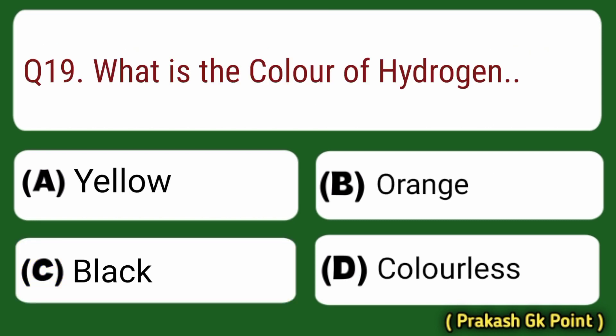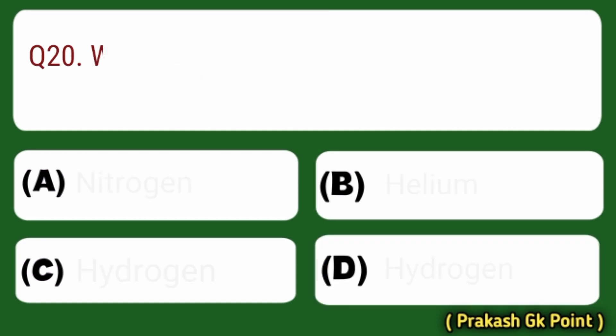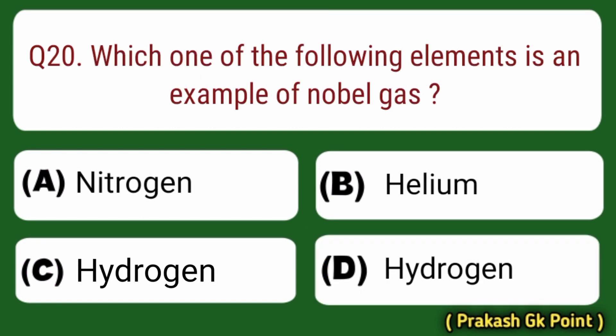Next question: what is the color of hydrogen? Answer: Option D — Colorless.